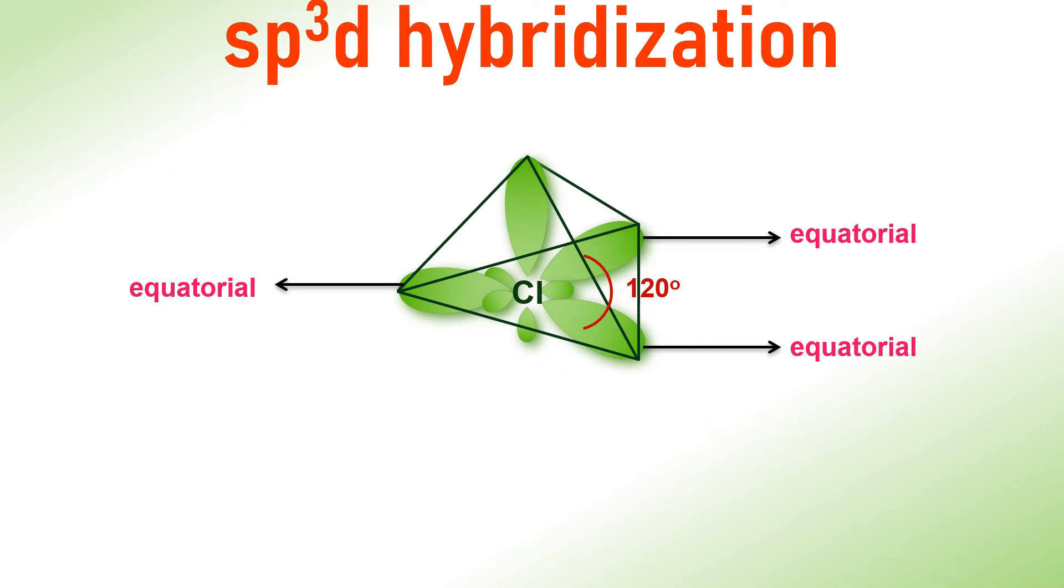While the remaining two are positioned above and below the trigonal plane. These are referred to as axial orbitals. And these axial orbitals make 90 degrees of angle with the equatorial orbitals.